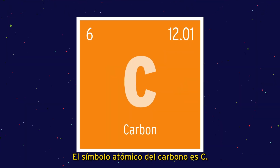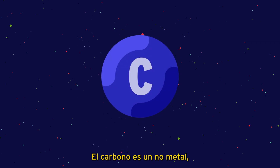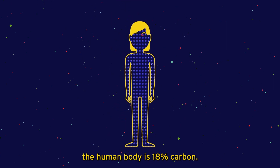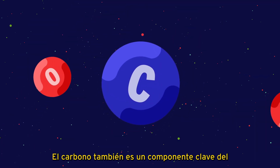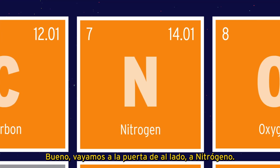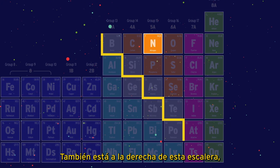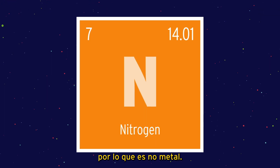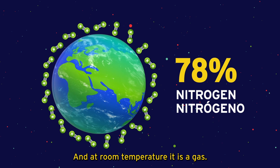Carbon, atomic symbol C — the atomic number is six, so it has six protons. Carbon is a nonmetal, but more importantly, el cuerpo humano tiene un dieciocho por ciento de carbono. Carbon is also a key component of carbon dioxide, a molecule plants use to make food. Let's move next door to nitrogen — Symbolo N, y Número Atómico 7. Also to the right of the stair step, so a nonmetal. Nitrogen makes up 78% of our atmosphere, y a temperatura ambiente es un gas.